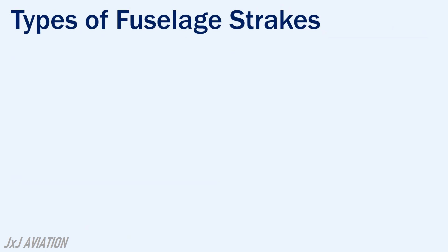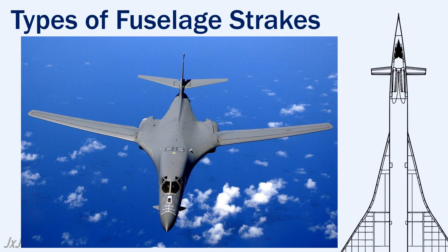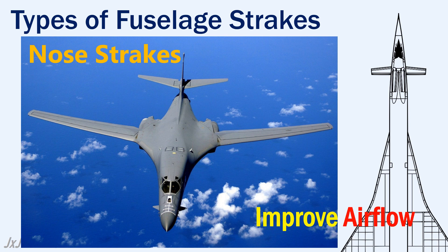Now let's look at the different types of fuselage strakes and why they are installed. At the nose, smaller strakes called nose strakes are installed. Like nacelle strakes, they are also used to improve the airflow across the wing and are extremely useful at high angles of attack.